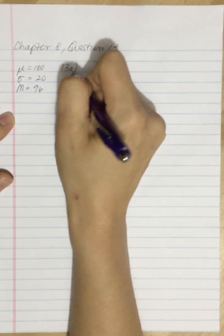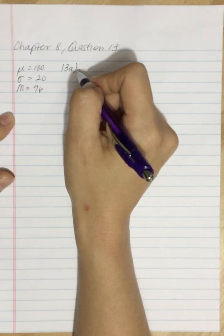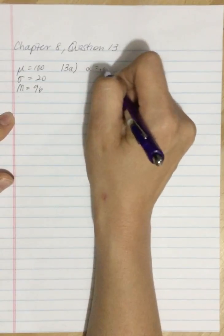Part A asks: how large a sample is necessary for this sample mean to be statistically significant? Assume a two-tailed test with an alpha of 0.05.